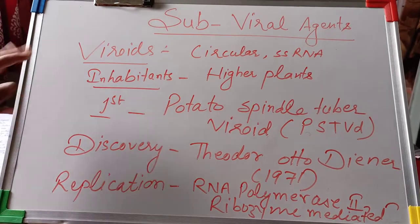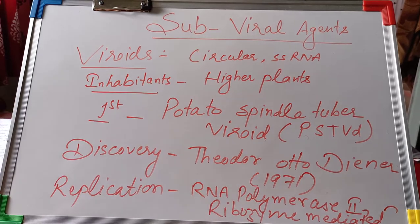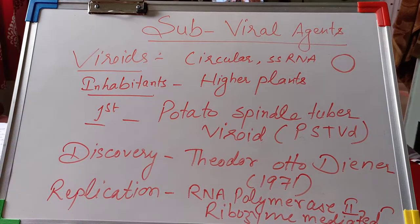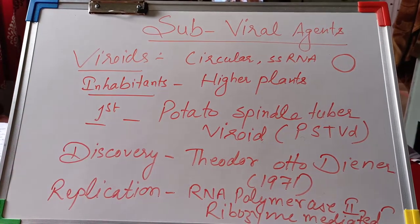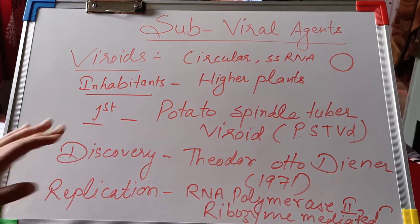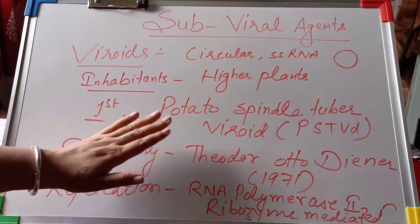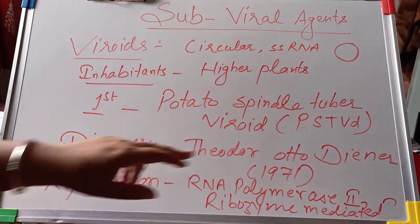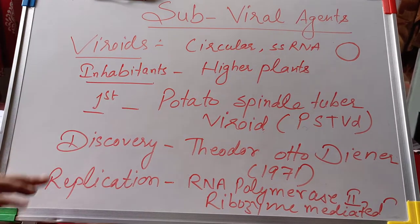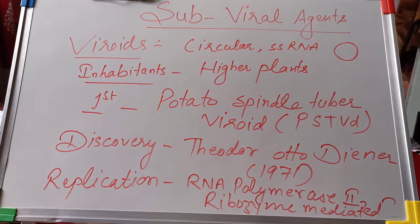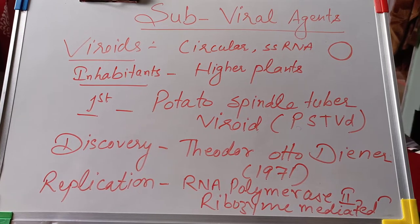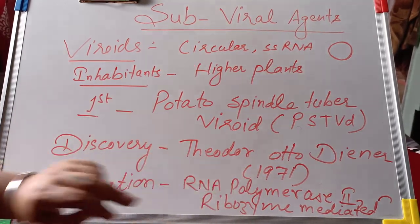Viroids are circular single-stranded RNA molecules and mainly affect higher plants like angiosperms. The first viroid discovered was the Potato Spindle Tuber Viroid, abbreviated as PSTV. It was discovered by Theodore Otto Diener in 1971. Diener was a plant pathologist at the U.S. Department of Agriculture Research Center in Maryland, and he identified the first viroid in 1971.